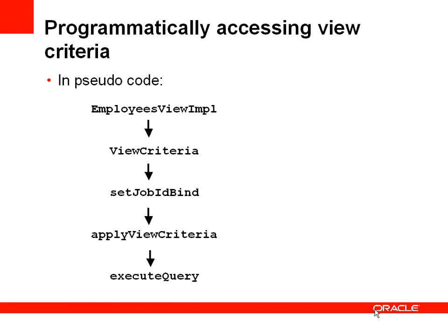In a bit more detail: for the employees view object we'll look at the EmployeesViewImpl file. In there we'll get a handle to a view criteria object. We can then expose getters and setters for the bind variables defined at design time — for example, defining a job ID bind variable will automatically give us a setJobIDBind method. Once we have a handle to the view criteria and have set the bind variable, we apply the view criteria and call a method to execute the query.